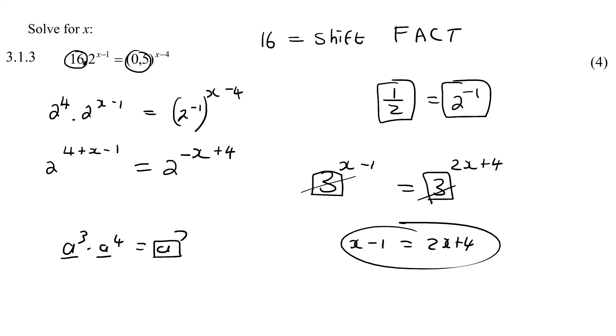Now we are in business because check, we've got a 2 on both sides, just like I showed over here. So you can ignore those 2s now. And all that we're left with now is 4 plus x minus 1 equals minus x plus 4.